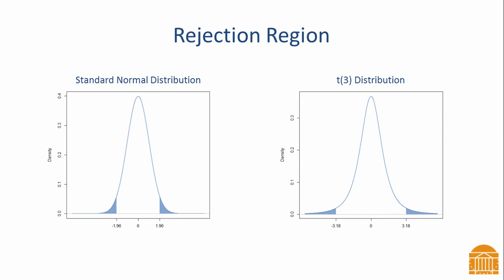The figure on the right shows a t-distribution that also has the extreme 5% of the area shaded in blue. Notice that the rejection region does not begin until values are more extreme than 3.18. Thus, a more extreme value is needed to reach the rejection region for a t-statistic than it is for a z-statistic.